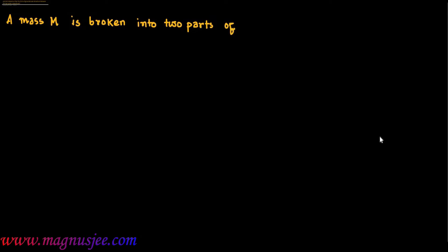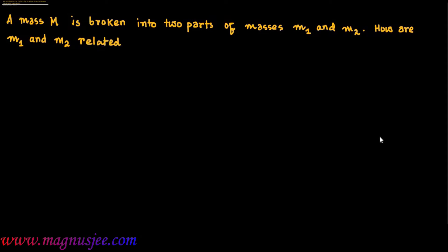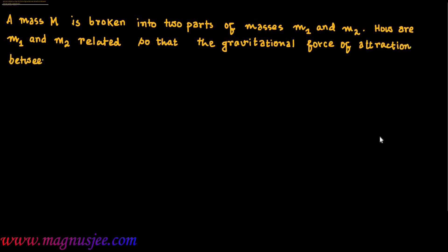A mass capital M is broken into two parts of masses M1 and M2. How are M1 and M2 related such that the gravitational force of attraction between the two parts is maximum?